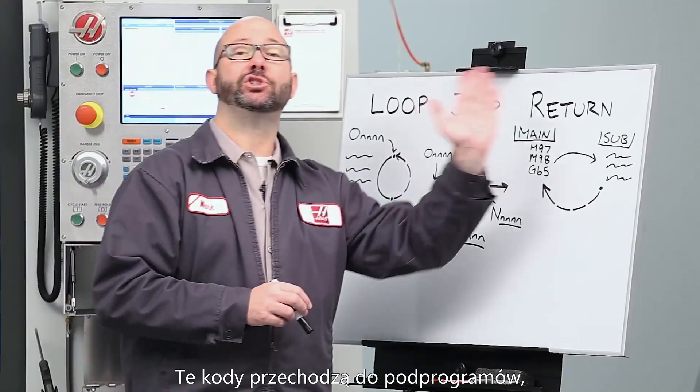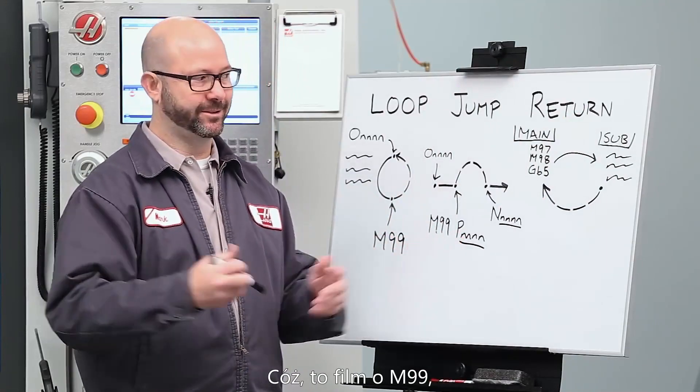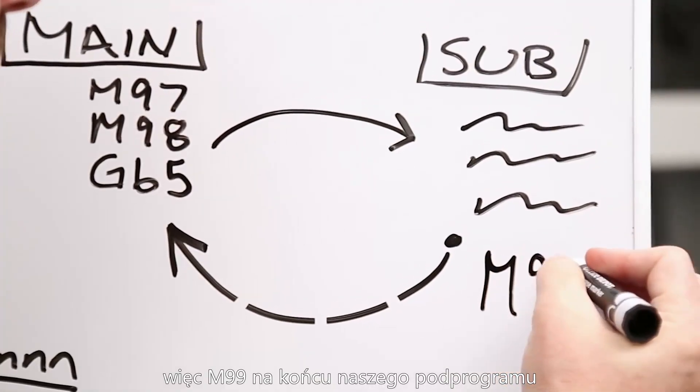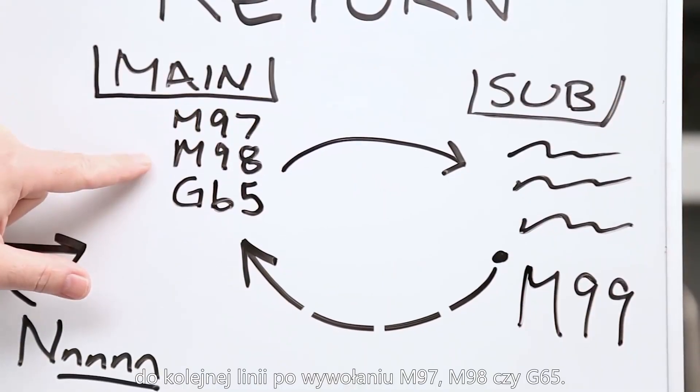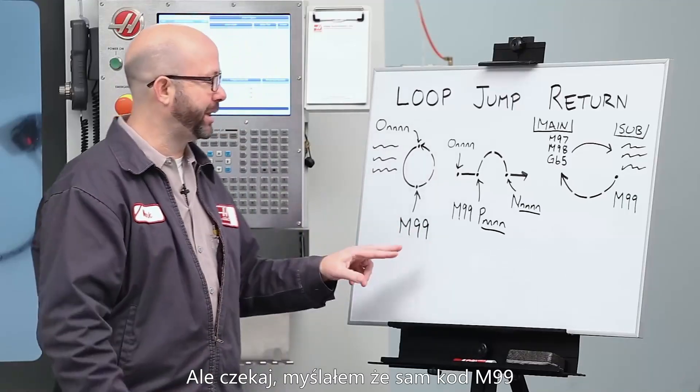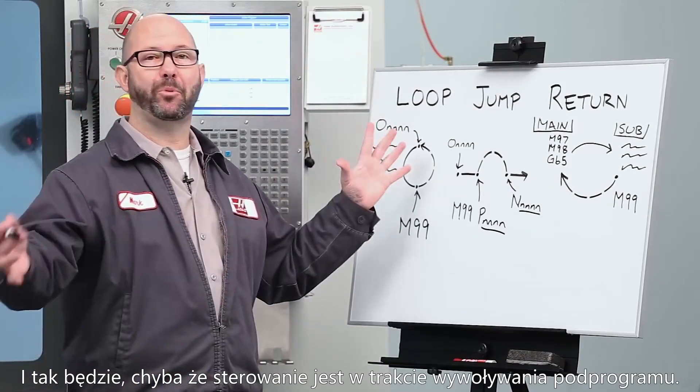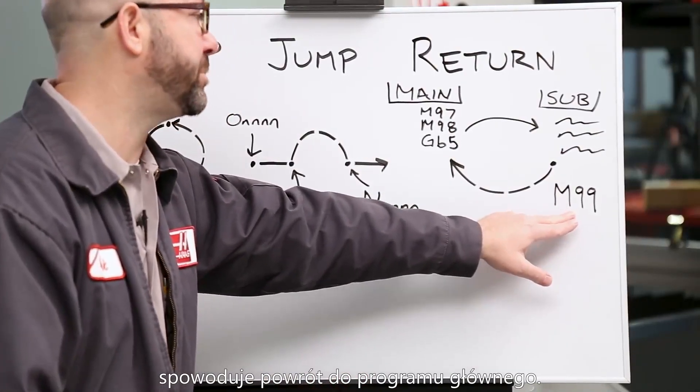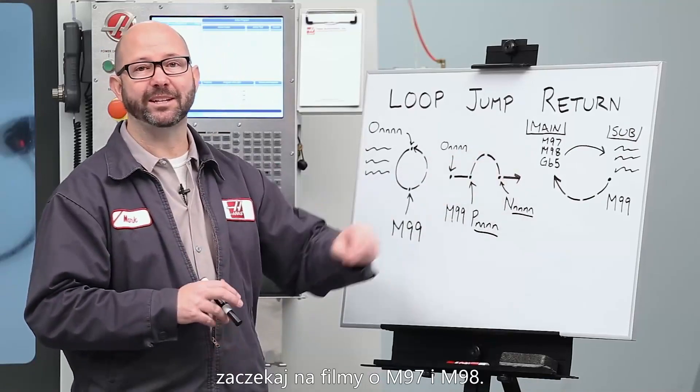These codes get us to our sub programs, but how do we get back? Well, this is a video on M99. An M99 at the end of our sub program will return us to our main program on the line just following our M97, M98, or G65 macro call. But wait, I thought that a plain M99 would cause the program to loop. Well, it does, except when it's in a sub program. When you're in a sub program, a plain M99 causes the program to return to the main. For more information, wait for these M97, M98 videos.